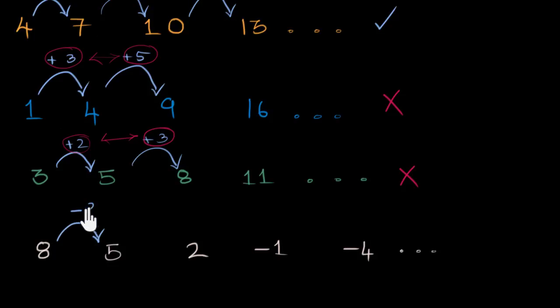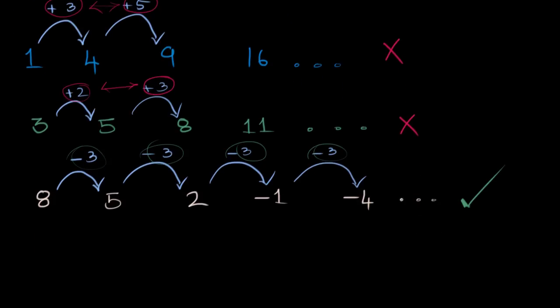So I jump a minus 3 to get here. I jump another minus 3 to get here. Another minus 3 to get here. And another minus 3 to get here. So this is an arithmetic progression because the jump size is remaining a constant. So you now know that the jump size need not be a positive number. It can be a negative number for all we know.